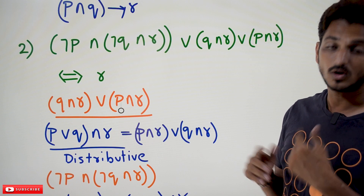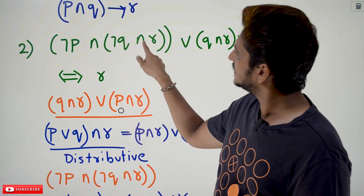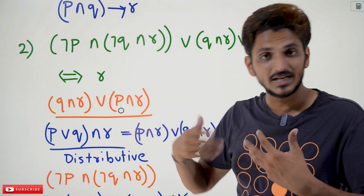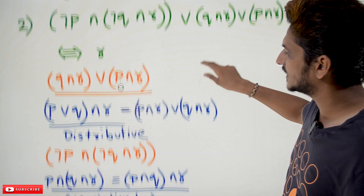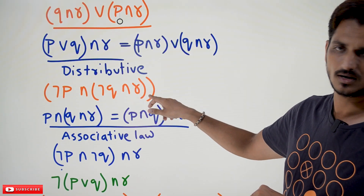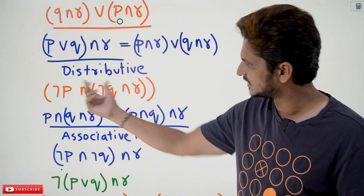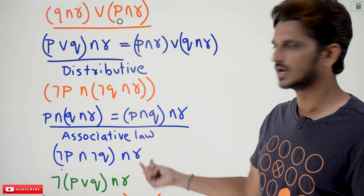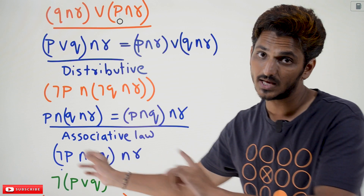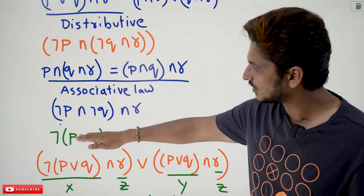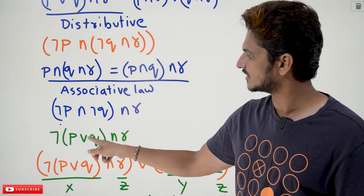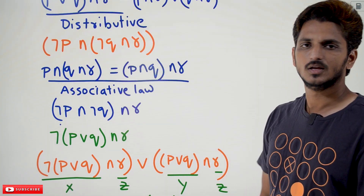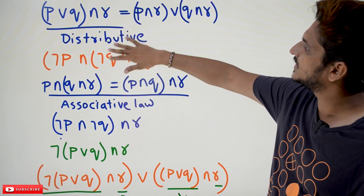Take this first part: by applying associative law we got negation P conjunction negation Q, then conjunction R. So why we took negation P conjunction negation Q together? By taking the negation outside using De Morgan's law, conjunction is converted to disjunction, giving negation of (P disjunction Q). So the first part is converted using associative law and De Morgan's law. The second part is converted using distributive law.